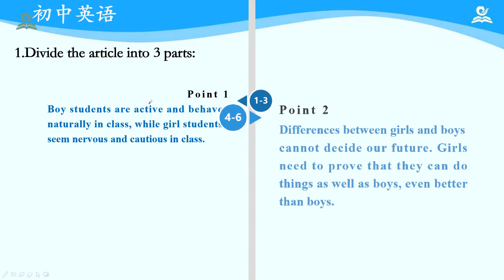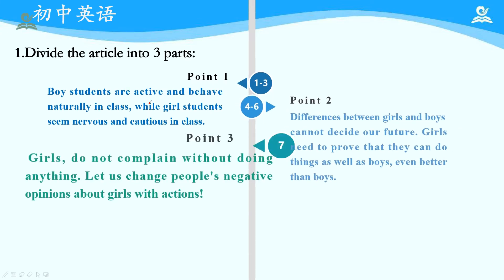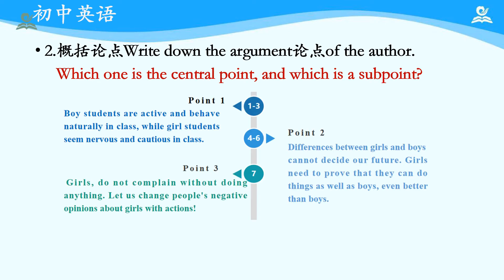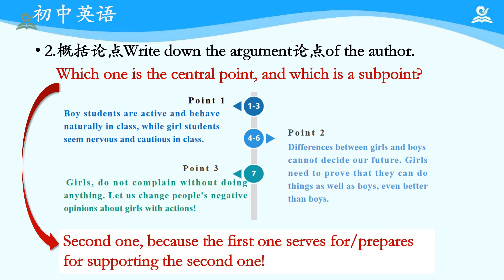The second part, paragraph 4 to 6: the main idea is the difference between girls and boys cannot decide our future, and girls need to prove that they can do things as well as boys, even better than boys. The last paragraph is the concluding part. The main idea is: girls, do not complain without doing anything. Let us change people's negative opinions about girls with our own actions.